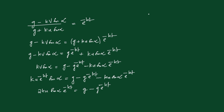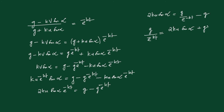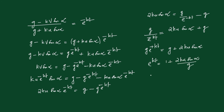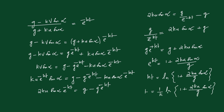Dividing the equation by e^(-kt): 2ku sin alpha = g/e^(-kt) - g = g e^(kt) - g. Taking -g to the left side: g e^(kt) = 2ku sin alpha + g. Dividing by g: e^(kt) = 1 + 2ku sin alpha/g. Therefore, kt = ln(1 + 2ku sin alpha / g).